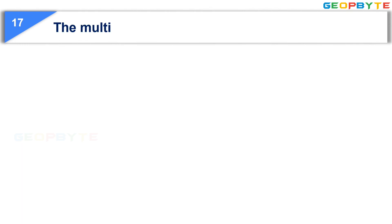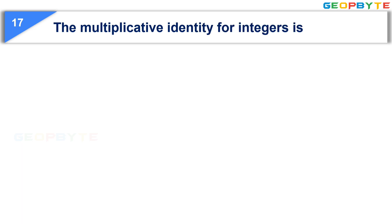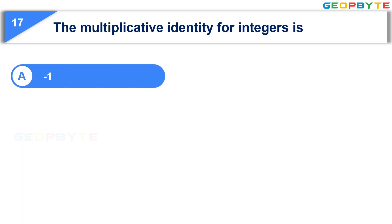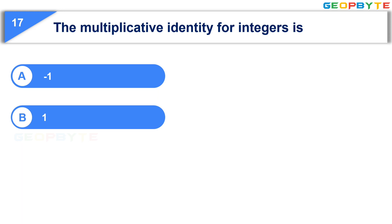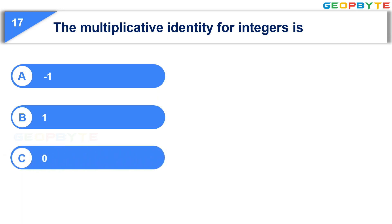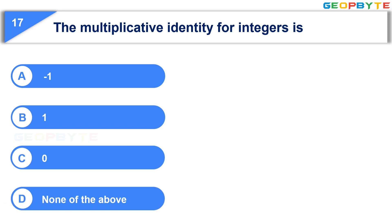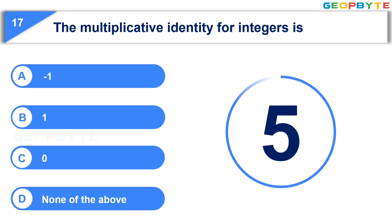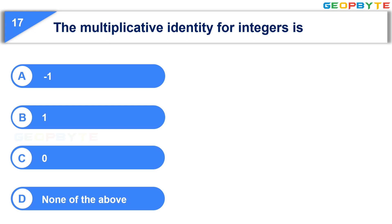The seventeenth question: The multiplicative identity for integers is — Option A: minus 1. Option B: 1. Option C: 0. Option D: none of the above. Your time starts now. Your time is up. And the correct answer is Option B: 1.